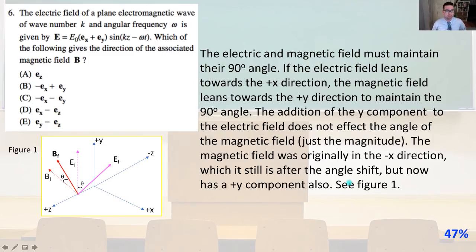Number 6. The electric field of a plane electromagnetic wave of wave number K and angular frequency W is given by E equals EO quantity EX plus EY and that quantity times sine quantity KZ minus WT. So which of the following gives the direction of the associated magnetic field? So I've drawn a beautiful little picture down here for you guys to display this. So the electric and magnetic field must maintain their 90 degree angle if the electric field leans towards the positive X direction. So here we are leaning towards the positive X direction. Then the magnetic field leans towards the positive Y direction to maintain the 90 degree angle.